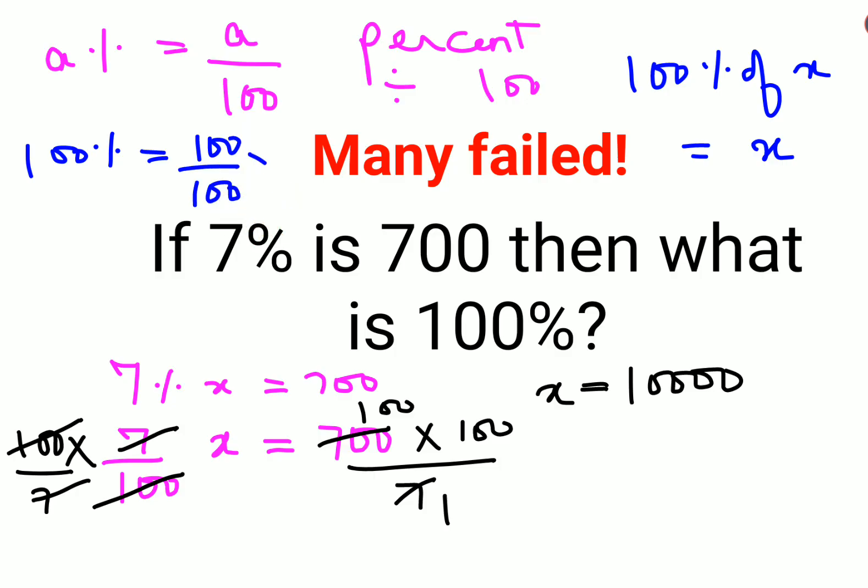That is nothing but 1. So basically, 100% of x means multiplying it with x, which becomes 100/100 times x. This equals 1 times x.